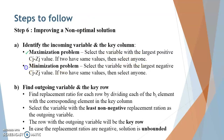For a minimization problem, select the variable with the largest negative Cj minus Zj value. Again, if there is a tie, you can select either one. Just remember: for maximization, since our objective is to maximize, we select the largest positive value; for minimization, we select the largest negative value.